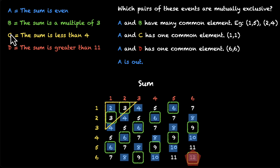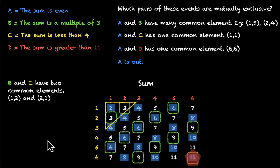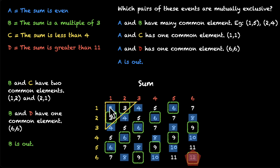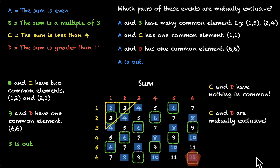Now let's look at B. Do B and C share anything? Yes — in the yellow triangle there are green elements too, so B and C have common elements. What about B and D? The element 12 is a multiple of 3 and also greater than 11, so B and D share that element. So B is also out. We're left with only C and D. Is there anything in common between the yellow region and the red region? No — the yellow region is on the top left and red is on the bottom right. C and D have nothing in common, so C and D are mutually exclusive.